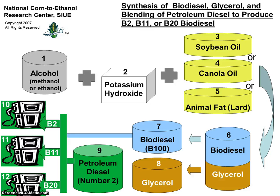Then in steps 7 and 8, we're drying off the glycerol. We'll wash the biodiesel to remove any excess methanol or potassium hydroxide that might be in it. Then we take the biodiesel and typically mix it — blend it with petroleum diesel — in either a B2, B11, or B20 blend. We'll talk a little bit more about that in just a moment.